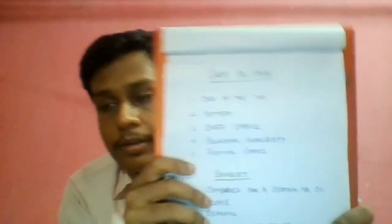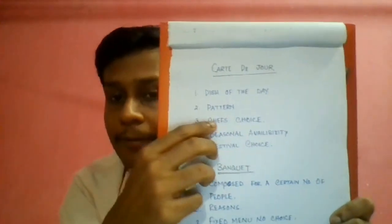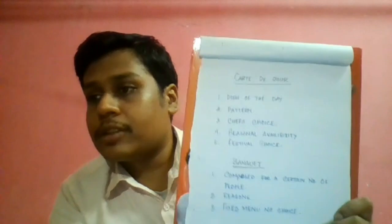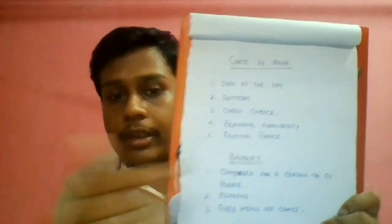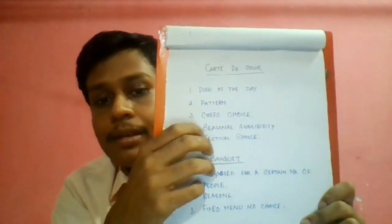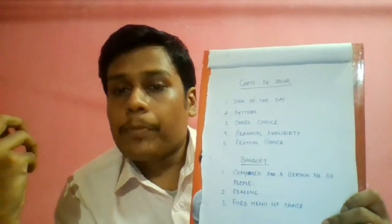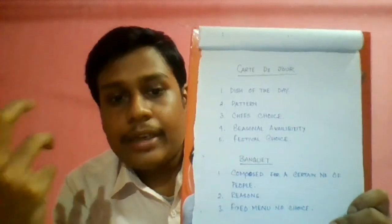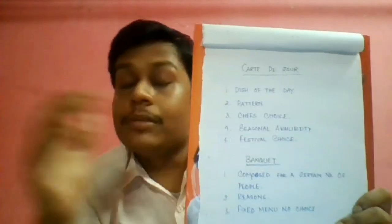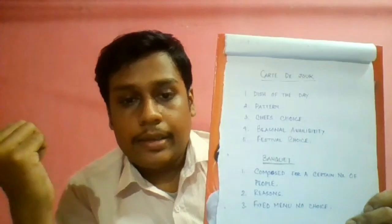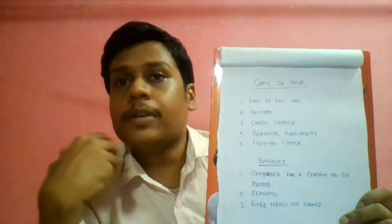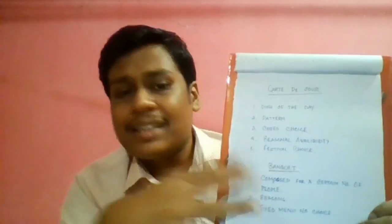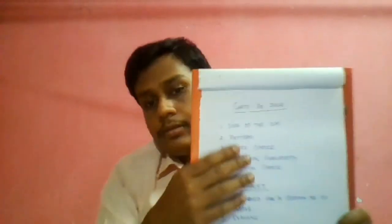Carte du jour means the dish of the day. It may be a special dish served alongside the à la carte menu. It may follow a pattern — for example, Monday: chicken butter masala, Tuesday: shahi tukra, Wednesday: kidney — and the pattern repeats the next week. It may also depend on the season — in winter, hot soups are popular — or on festivals, like haleem and shahi tukra during Ramadan, or ilish maacher paturi during Bengali festivals.